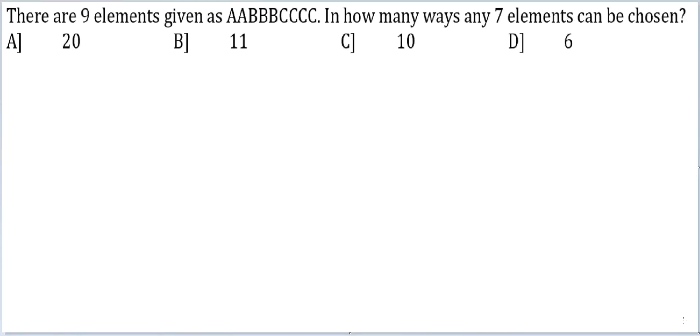Let's look at this question. There are 9 elements given as AABBBCCCC. In how many ways any 7 elements can be chosen? Now see, when you have repetition and you have large numbers to be chosen also, 9 and 7 are pretty large numbers.